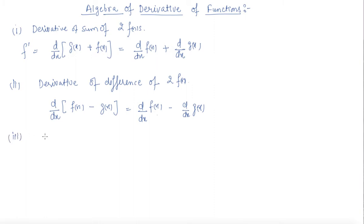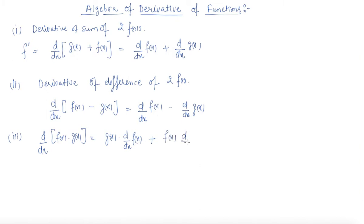Now for the product of two functions: d/dx [f(x) · g(x)]. Here the product rule applies: this equals g(x) · d/dx f(x) plus f(x) · d/dx g(x) — g(x) outside times the differentiation of the first function, plus f(x) outside times the differentiation of the second function. This is the formula to find the differentiation of a product of two functions.